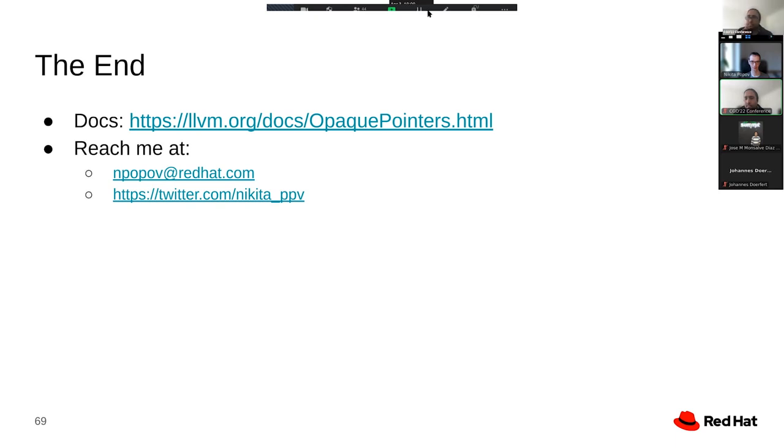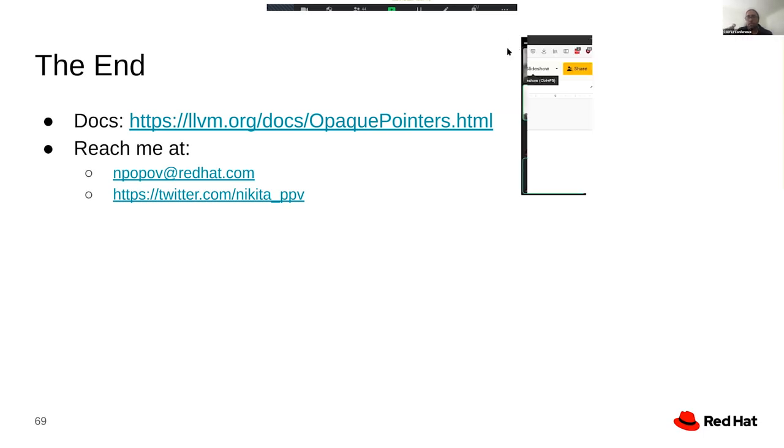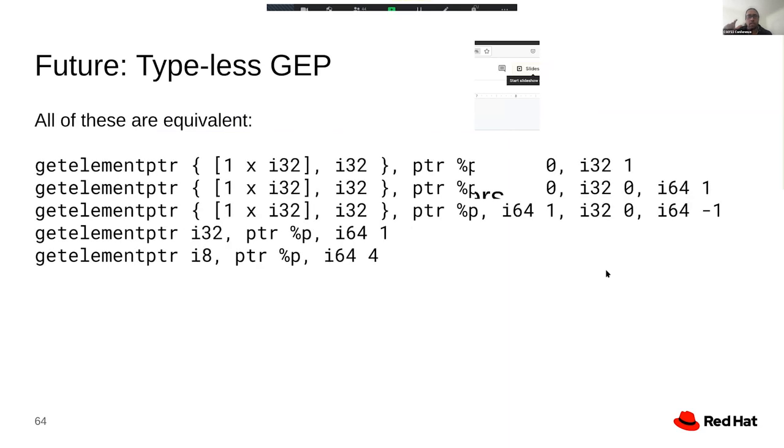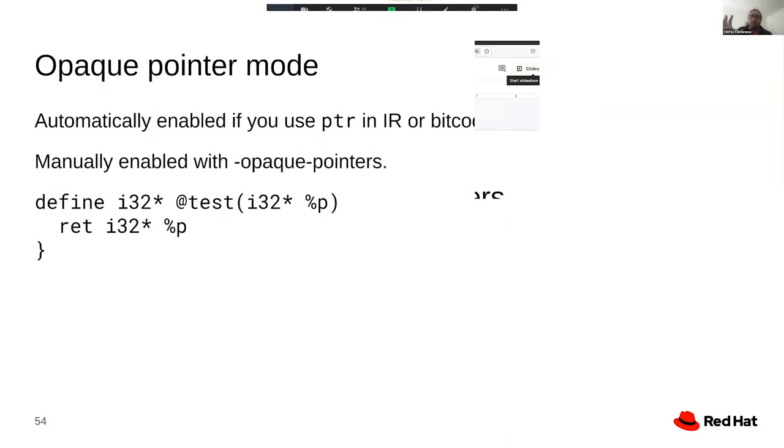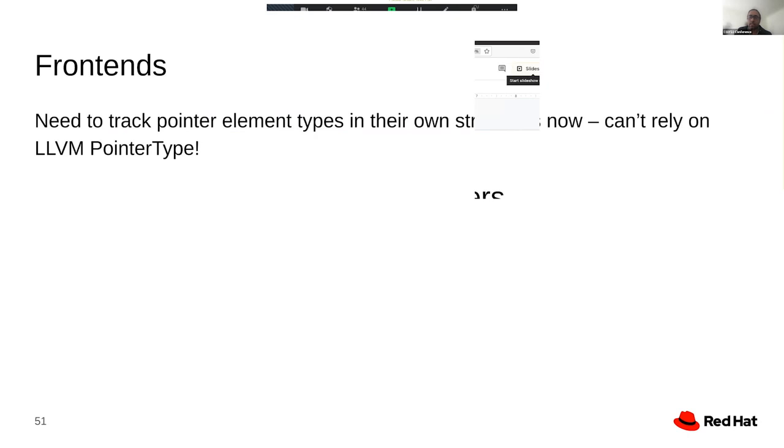I have a question. Some of the middle-end optimizations rely on alias analysis. Specifically, one of the optimizations I wrote, GVN Hoist, because of the opaque pointer, we saw a bug, there was a miscompilation. And it was fixed because the change was very localized. Do you have any guidance for other optimization writers that need to keep in mind?